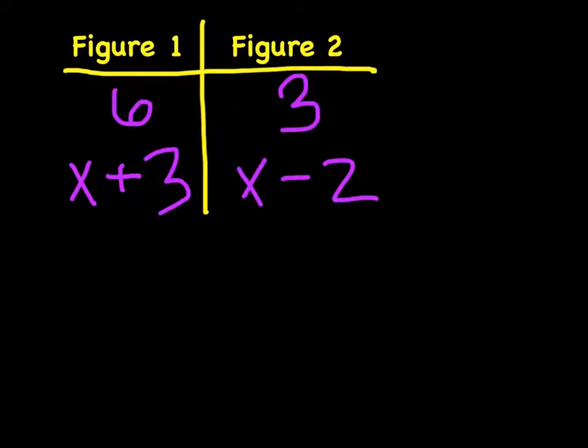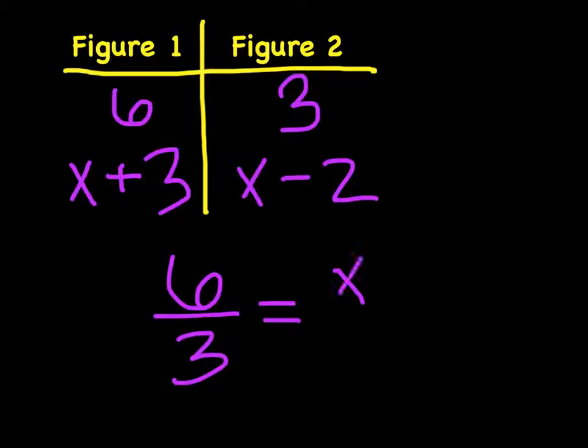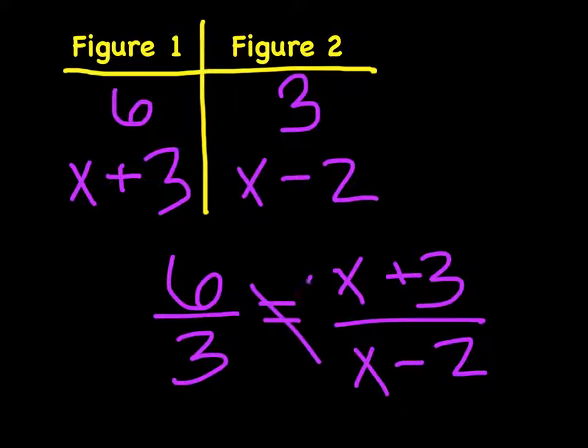To solve for x, we will need to make these into a fraction. 6 over 3, which equals x plus 3 over x minus 2. Then we will need to cross multiply.